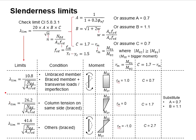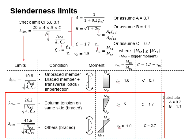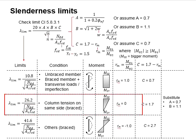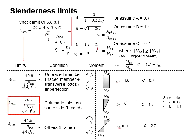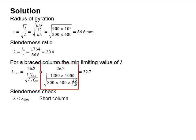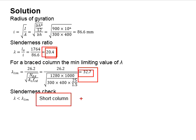The slenderness limit for the braced structures is given by these two equations. This represents a more critical situation for braced structures. Therefore, we use this as a checking criteria. Substitute the relevant value into the equations. You obtain the limit equals to 32.7. Compare the slenderness ratio with the limit. It is found that the slenderness ratio is less than the limit. Therefore, we know that the column is a short column.